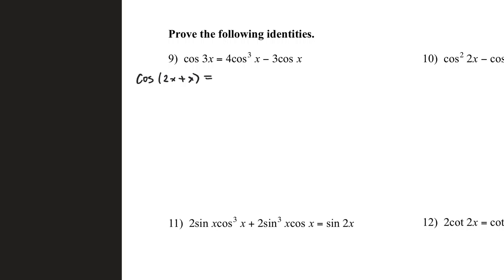So if we pull those identities out, we're going to basically use 2x as a and x as b. And if we plug those values in, it's going to look like this: cos 2x cos x minus sine 2x sine x.